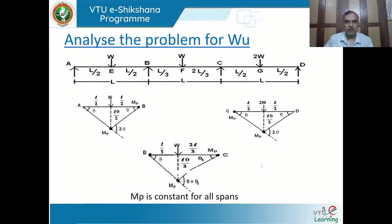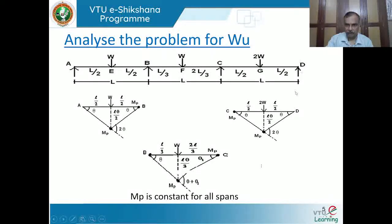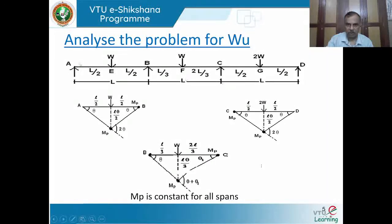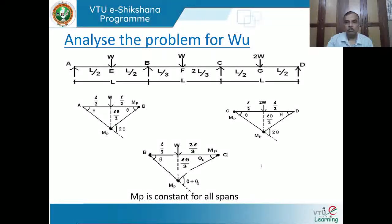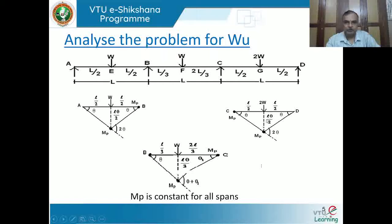Next problem from an examination paper: three-span continuous beam ABCD with concentrated loads only. Span AB is like a propped beam with load W; the formula for WC can be used directly. Span CD is similar to AB but with load 2W. Span BC is like a fixed beam because moments exist at both B and C. For AB and CD, the mechanism involves one plastic hinge at the fixed end and one under the load.